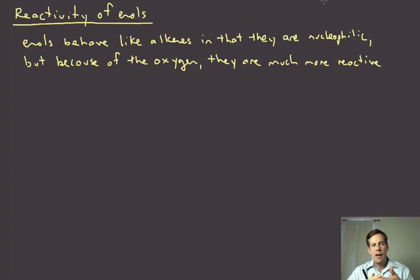Okay, so let's talk briefly about the reactivity of enols. As I said in the last slide, enols are going to be nucleophilic. So in that sense, enols really behave like alkenes, or at least like normal alkenes, in that they are nucleophilic. They're willing to give up their electron density and react with electrophiles. But because of the fact that they are attached to an oxygen, the enol double bond is much more reactive than alkenes.